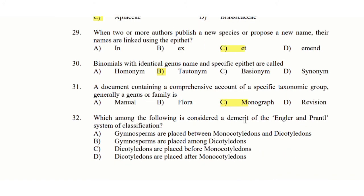32nd question: Which among the following is considered a demerit of the Engler and Prantl system of classification? Option A: Gymnosperms are placed between Monocotyledons and Dicotyledons. Option B: Gymnosperms are placed among Dicotyledons. Option C: Dicotyledons are placed before Monocotyledons. Option D: Dicotyledons are placed after Monocotyledons. The answer is option C.